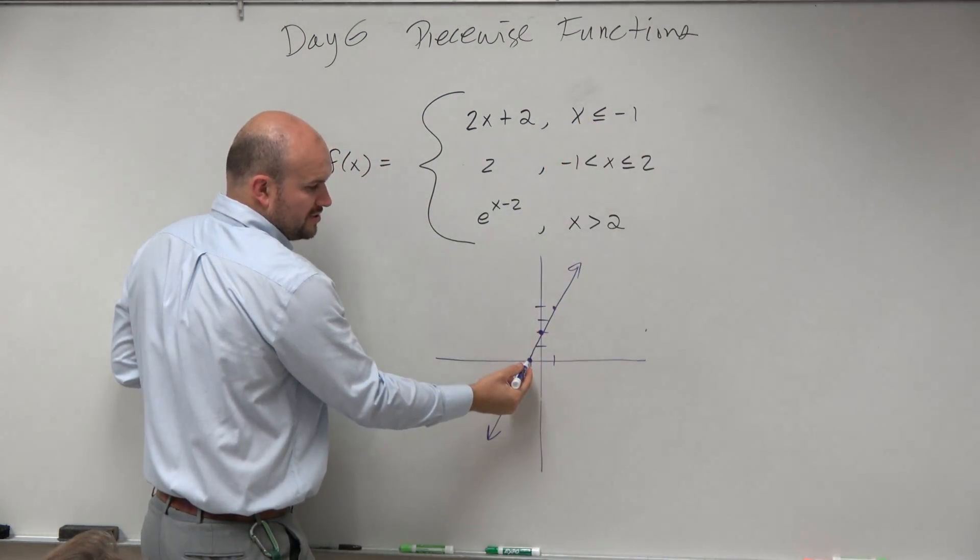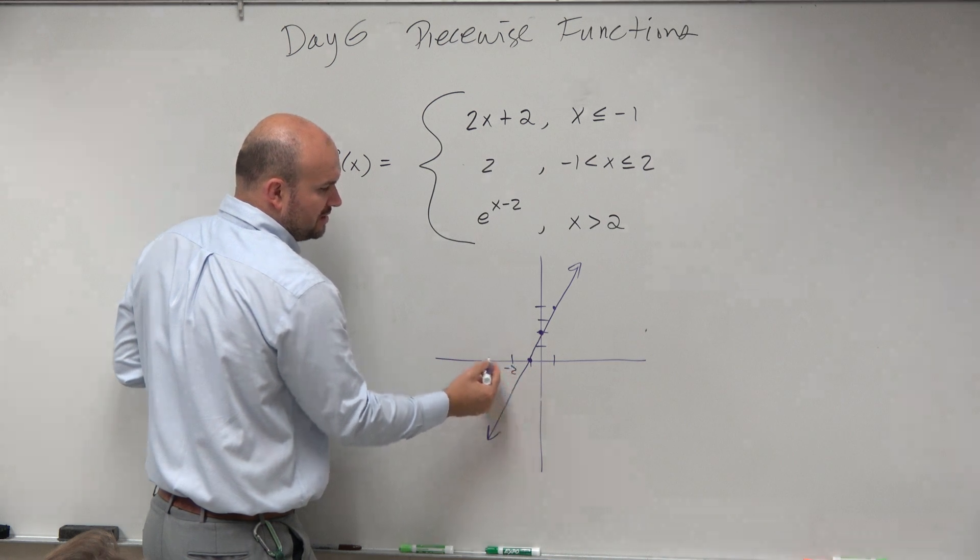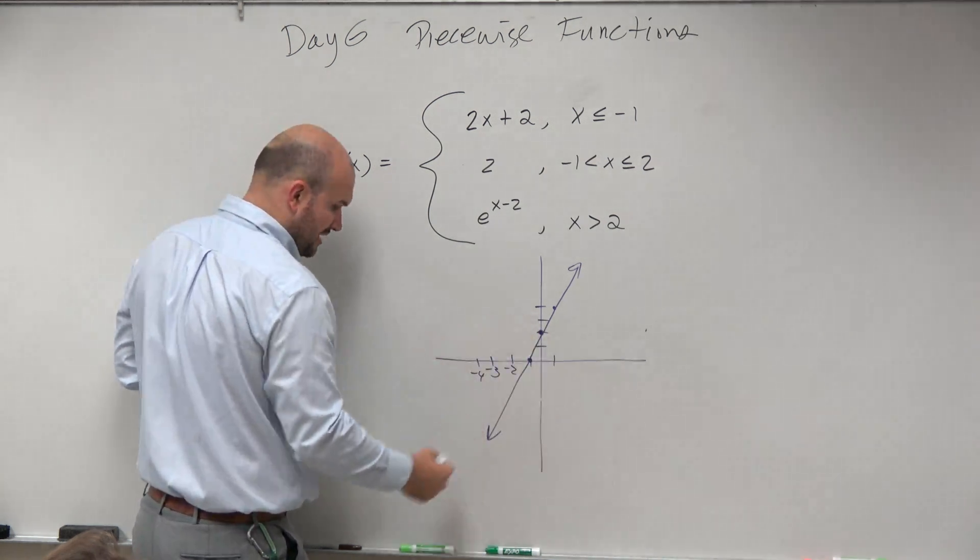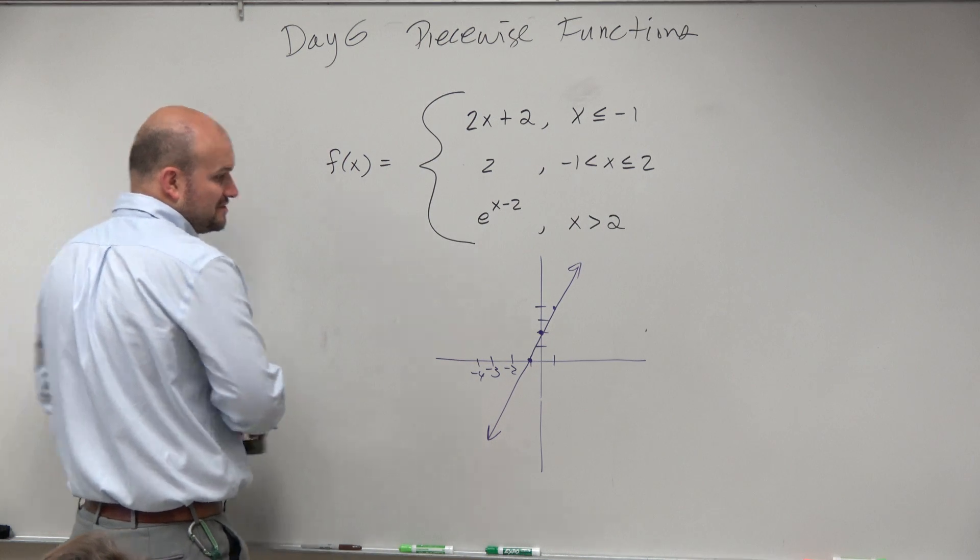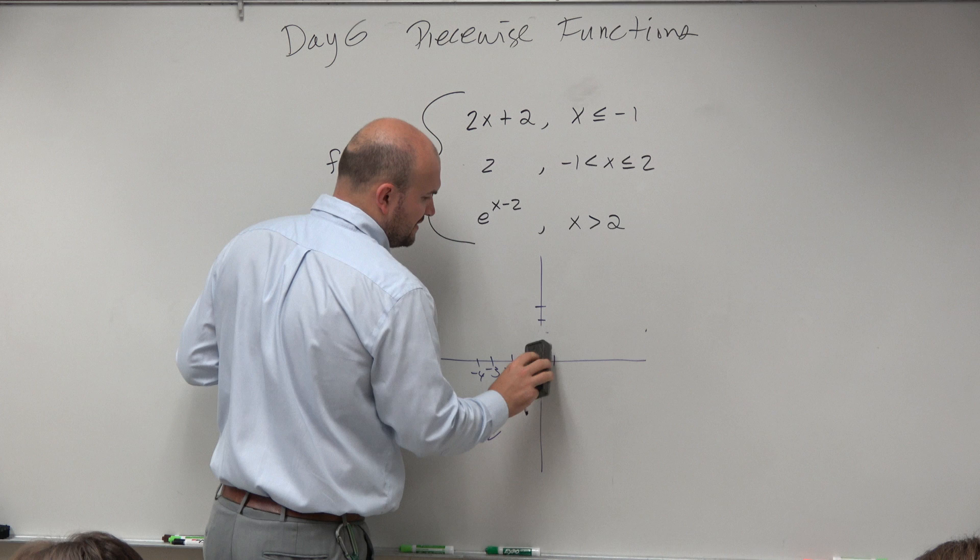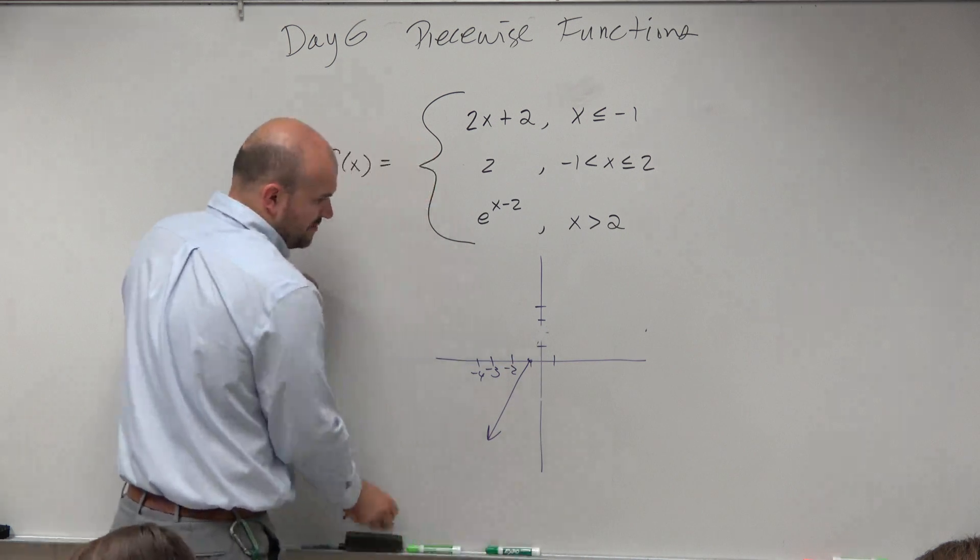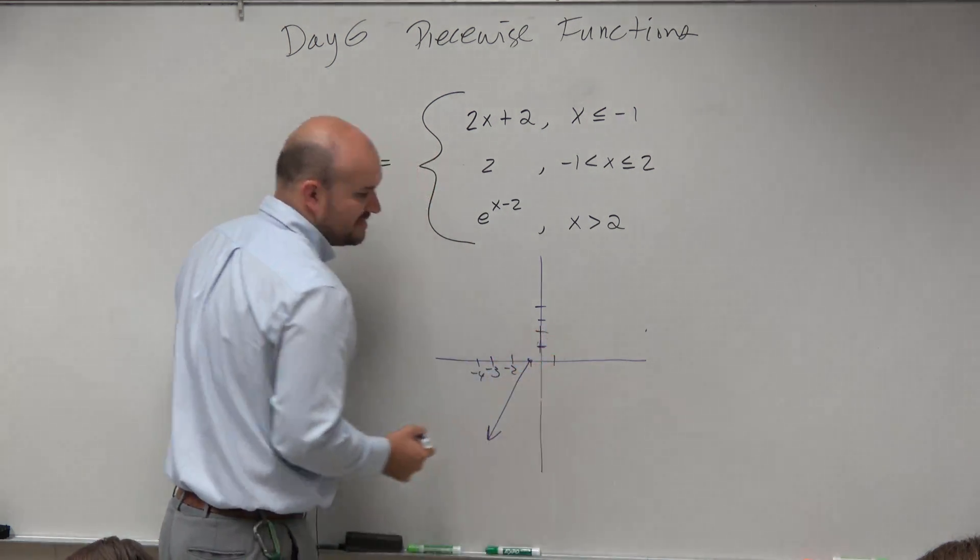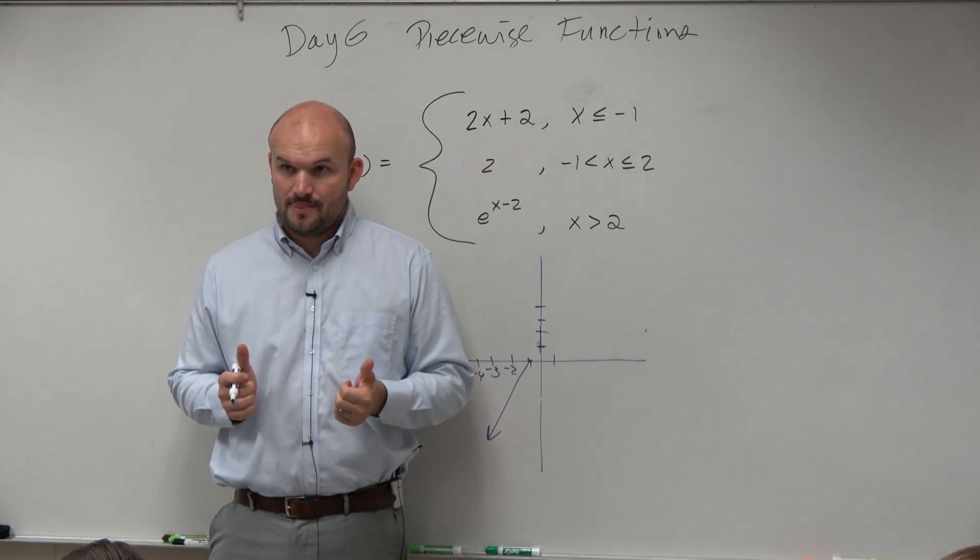It says I only want to graph this for values of x that are less than or equal to negative 1. Well, here's negative 1. So therefore, I only want to graph ones that are less than that. So that's going to be everything to the left. And it's less than or equal to, so that's going to be a solid dot. So I just erase everything else. Is everybody okay with me erasing and following my steps?